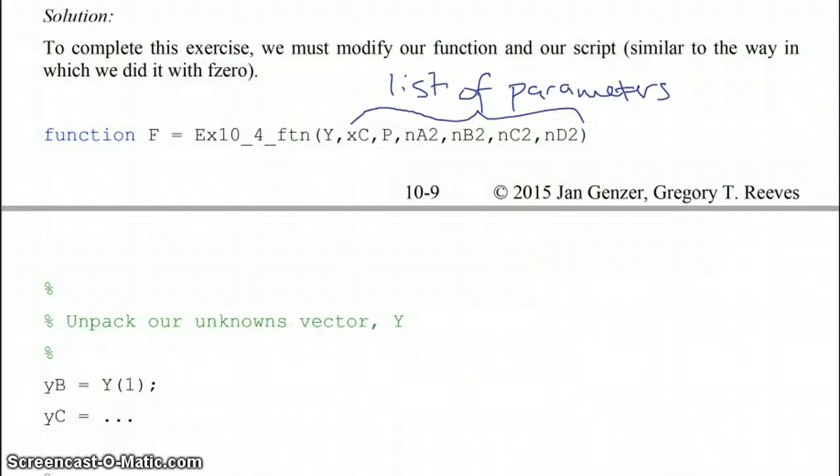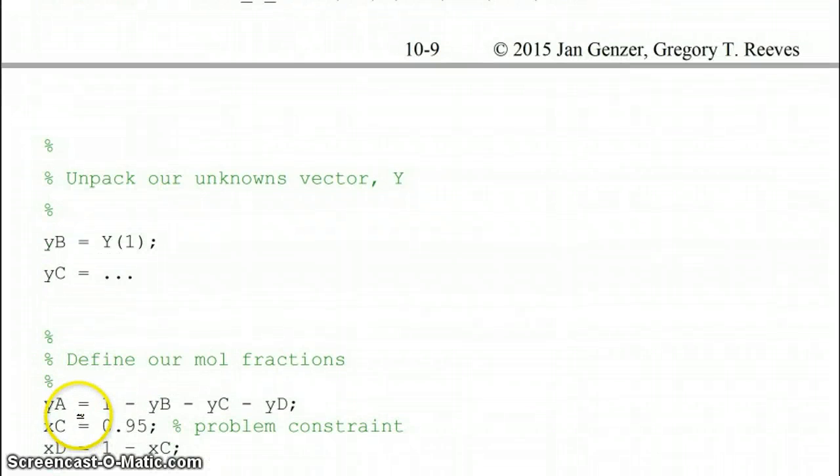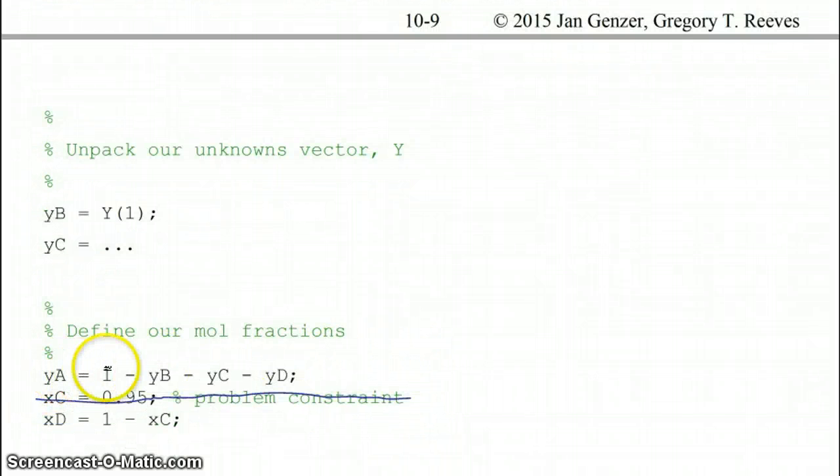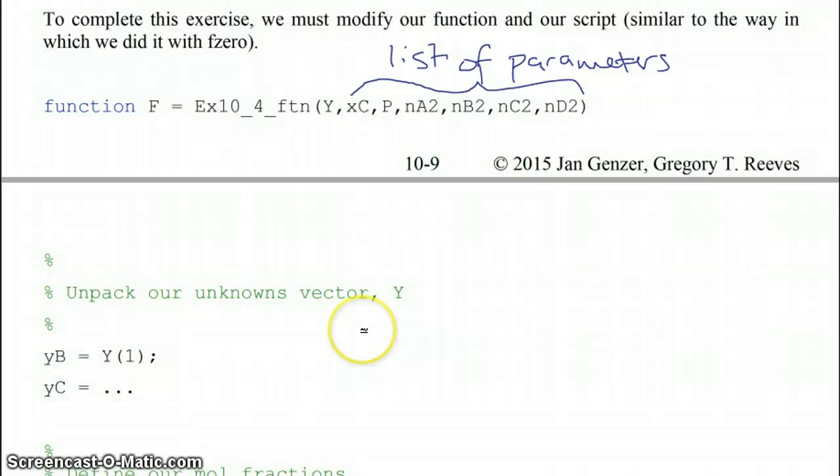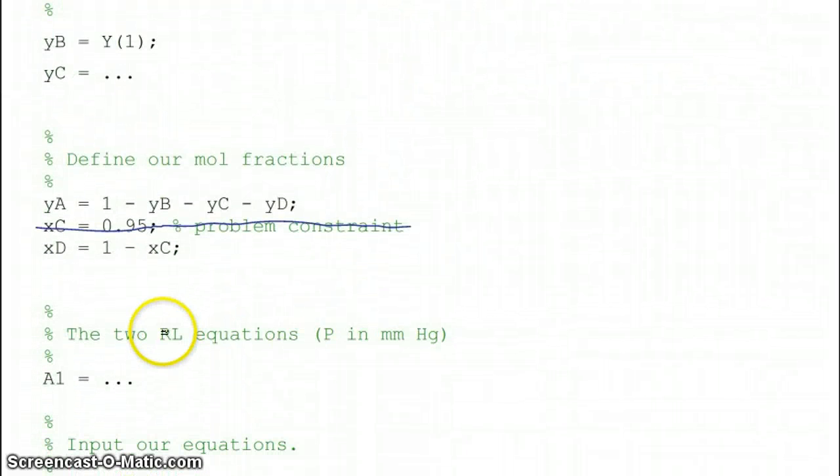In this function, as before, we're going to unpack our unknowns vector Y. We're going to define our mole fractions, and we don't want this one in here—that was a mistake. So just define our mole fractions where Y is one minus the other ones in the vapor stream, and XD is one minus XC in the liquid stream. Now we're not going to define any other of our constants in this function anymore. XC is not defined anymore—that was a mistake. Also, our system pressure and our four inlet component molar flow rates are not going to be defined within our function.